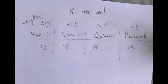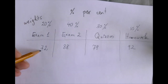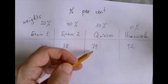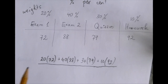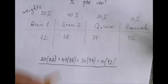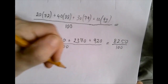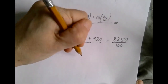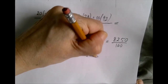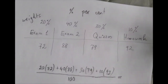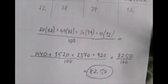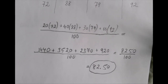What is your weighted average? Imagine we took not four, but 100 numbers — 20 of them are 72, 40 of them are 88, 30 of them are 79, and 10 of them are 92. When we add these four products, we get 8,025, and when we divide by 100, we get 82.5. If these were your results, your average is 82.5 out of 100.